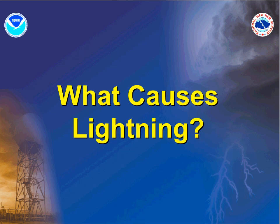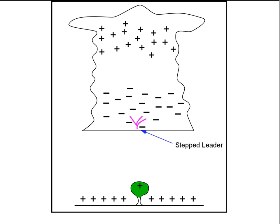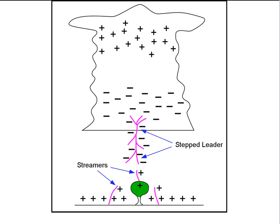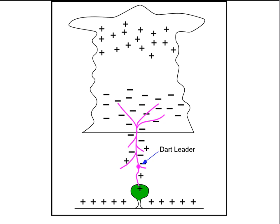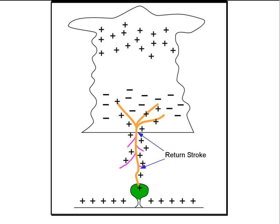What causes lightning? When the electrical charge gets large enough in one of the charge regions, a current called the step leader starts to make its way down from the cloud. As this step leader makes its way close to the ground, streamers from targets on the ground will start to reach up towards the thunderstorm. One of these streamers will attach itself to the step leader. At this time, charge is transferred from the cloud to the ground, and the flash of light is what we see.